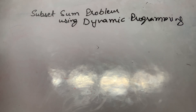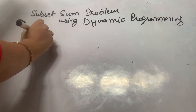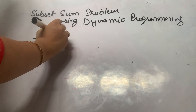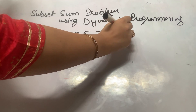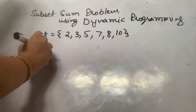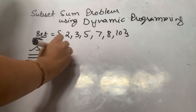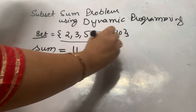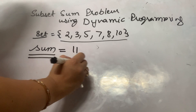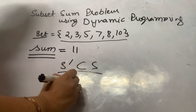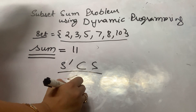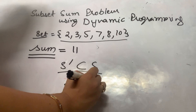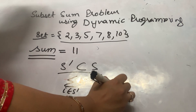To understand the subset sum problem using dynamic programming, we are given a set of elements — say 2, 3, 5, 7, 8, and 10 — and we are supposed to find a predefined sum, say 11. I have to find a subset S' of the given set S such that the total of all elements belonging to S' equals this predefined sum.